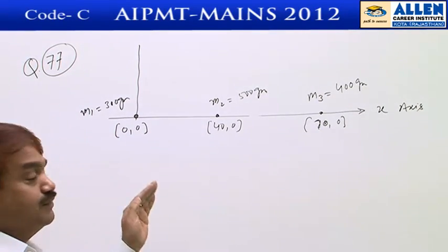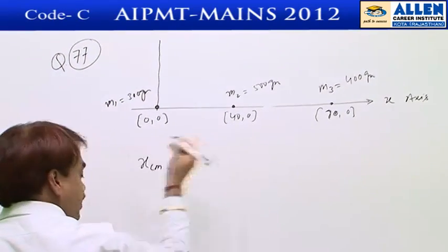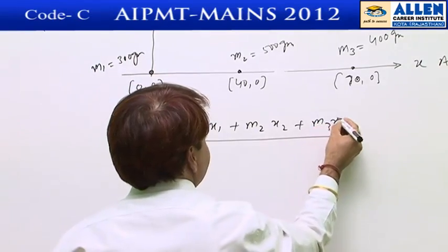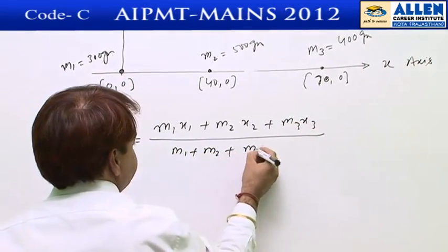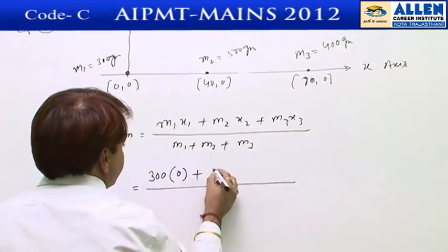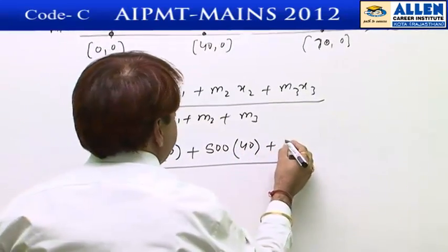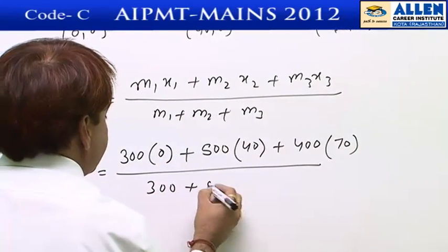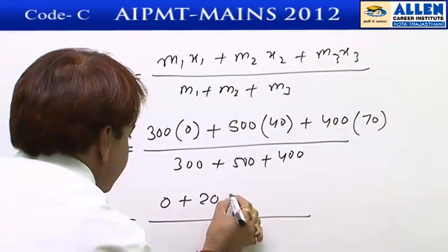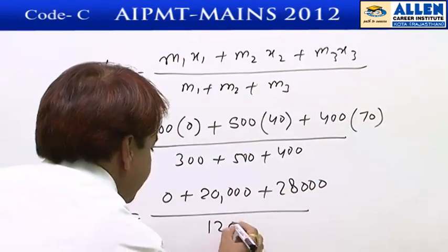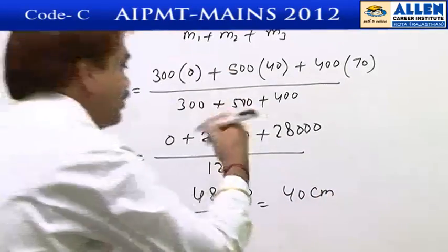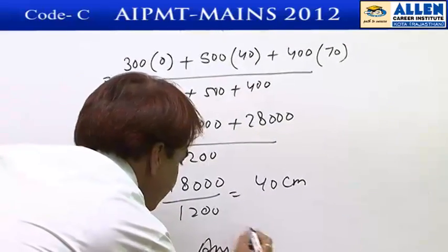We calculate the distance of the center of mass from the origin. The center of mass along the x-axis is given by (m1·x1 + m2·x2 + m3·x3) divided by (m1 + m2 + m3). Substituting: (300×0 + 500×40 + 400×70) divided by (300 + 500 + 400) = (0 + 20,000 + 28,000) divided by 1200 = 48,000 divided by 1200 = 40 centimeters from the origin. The correct option is the third one.